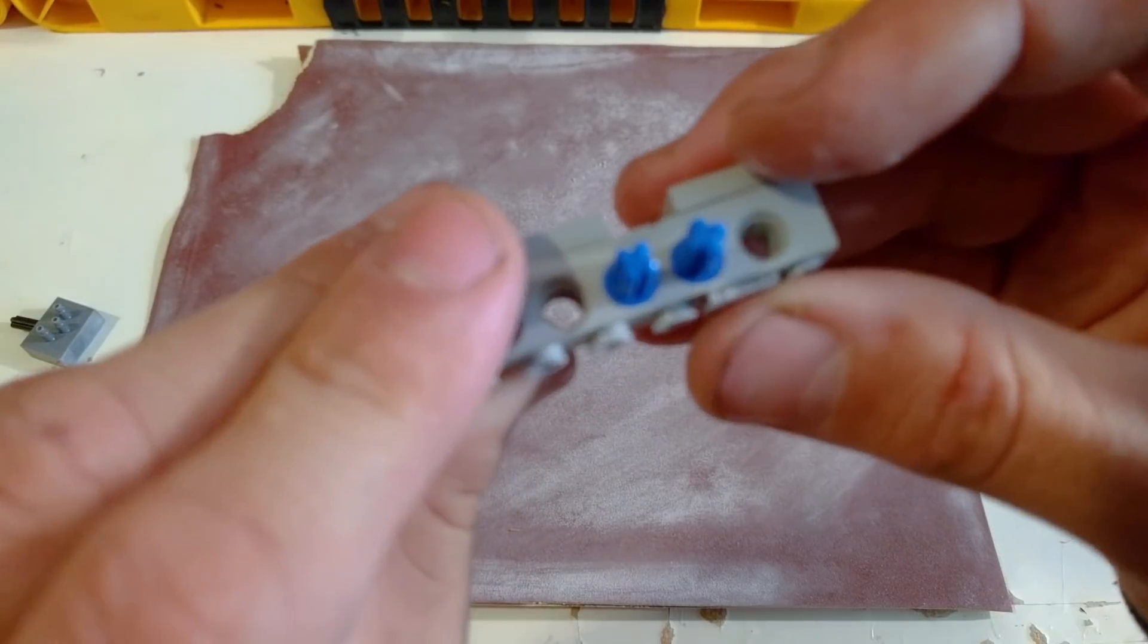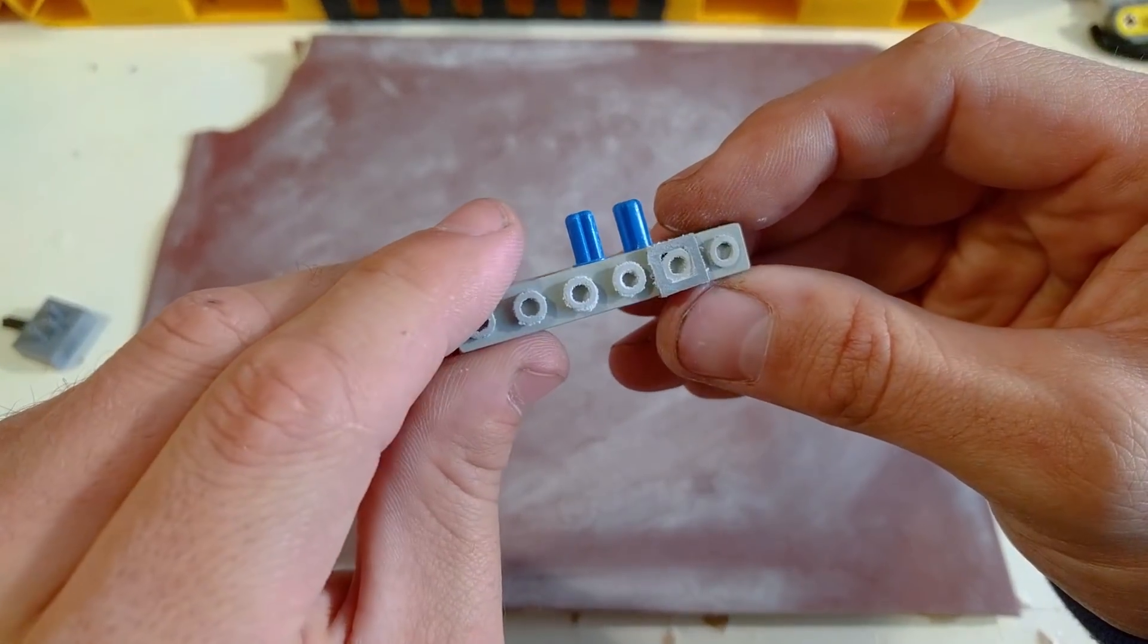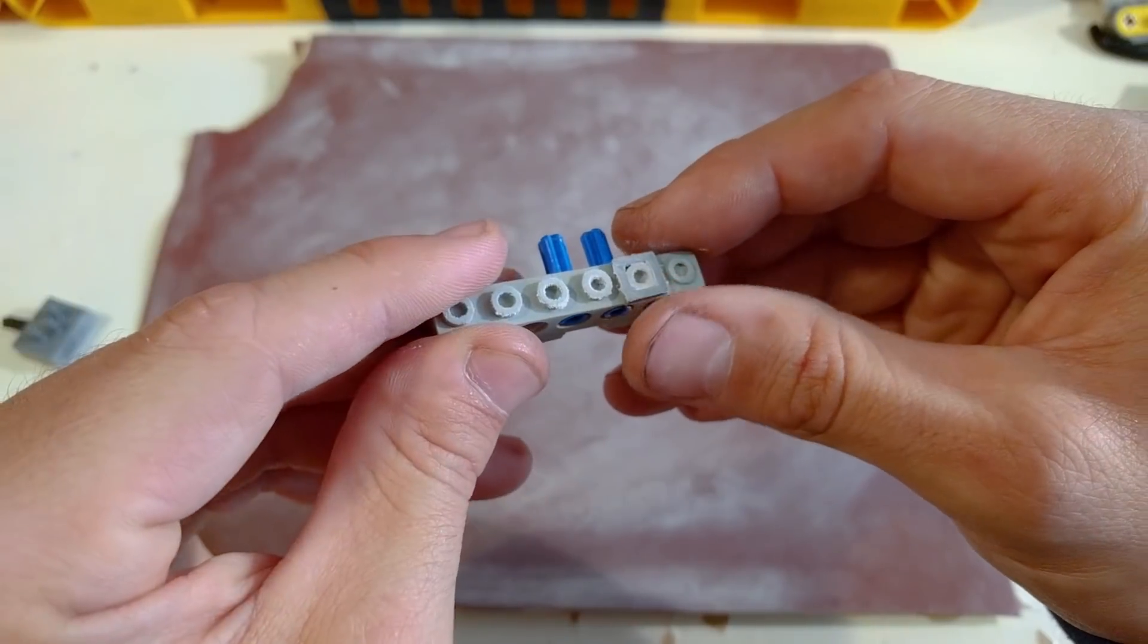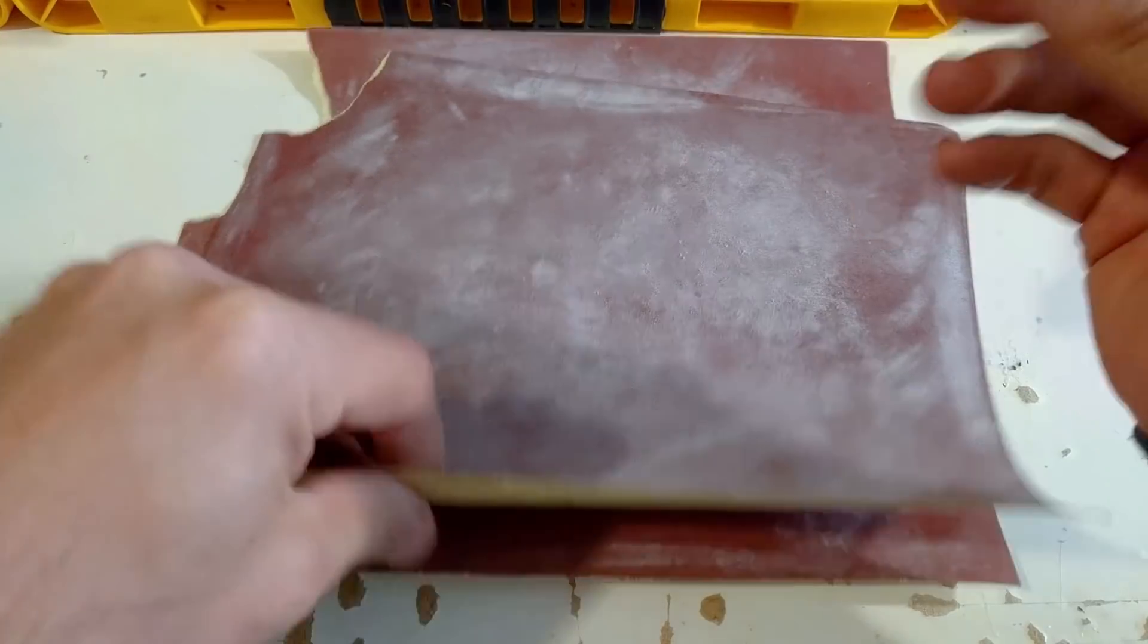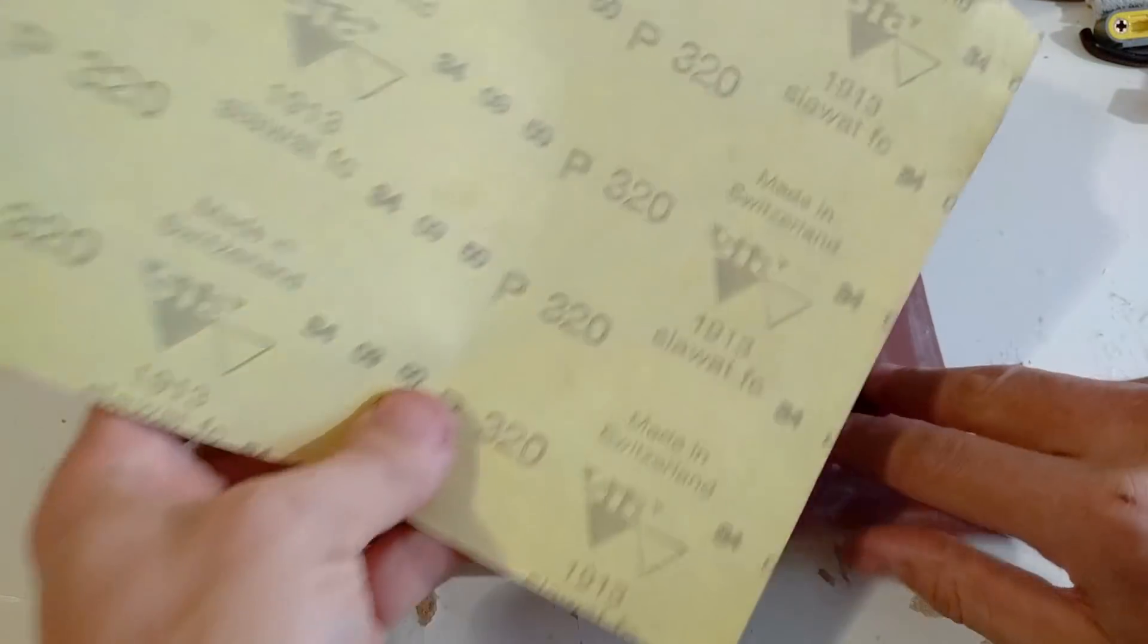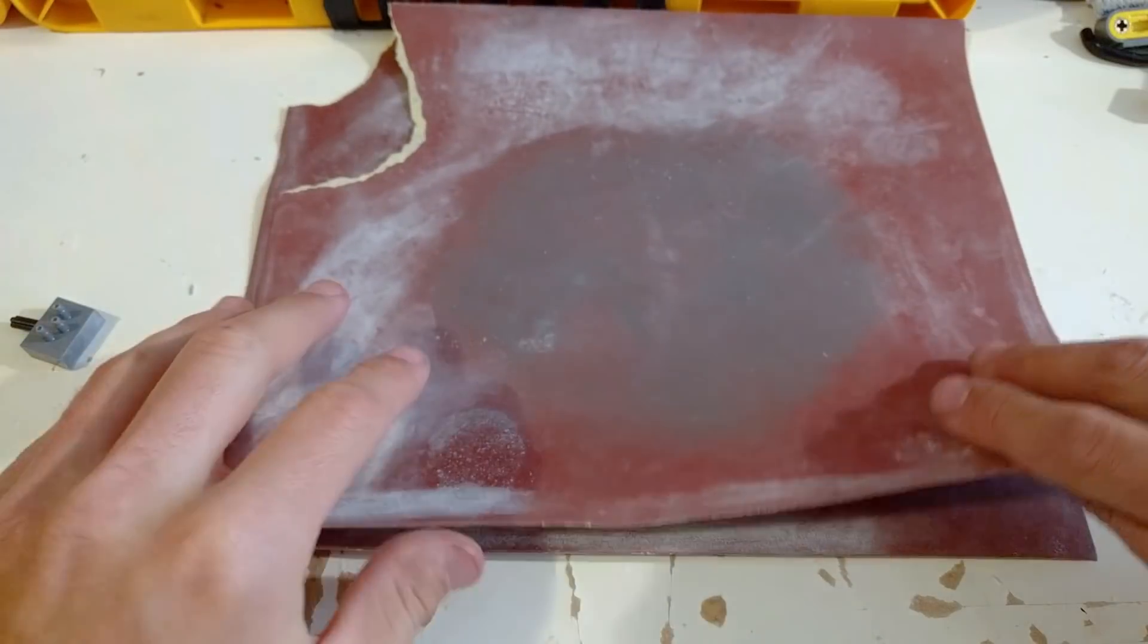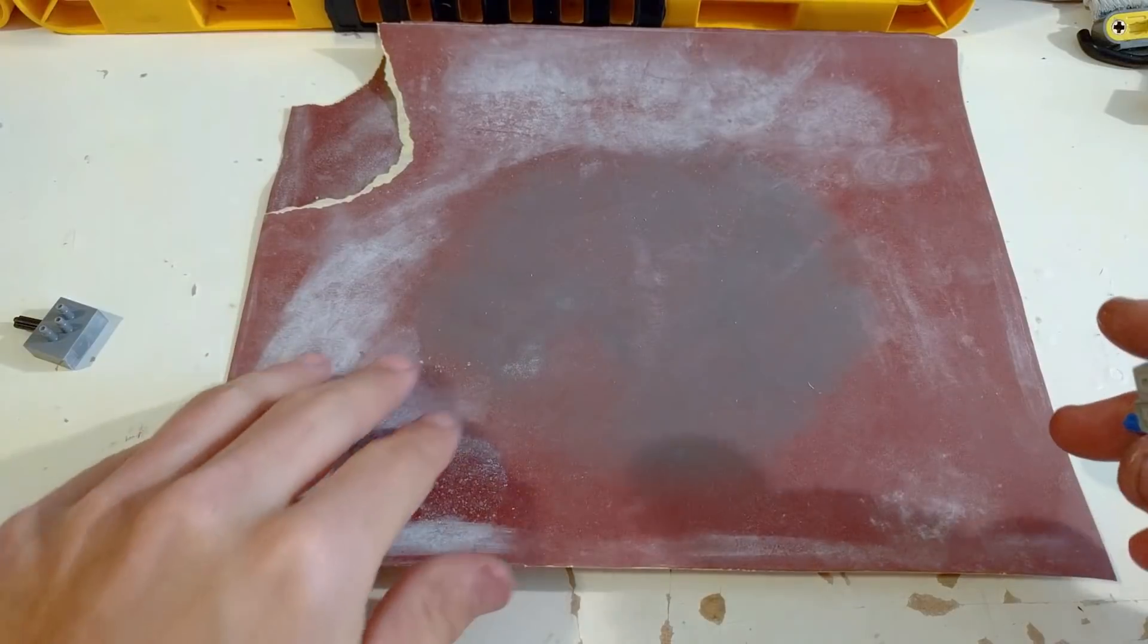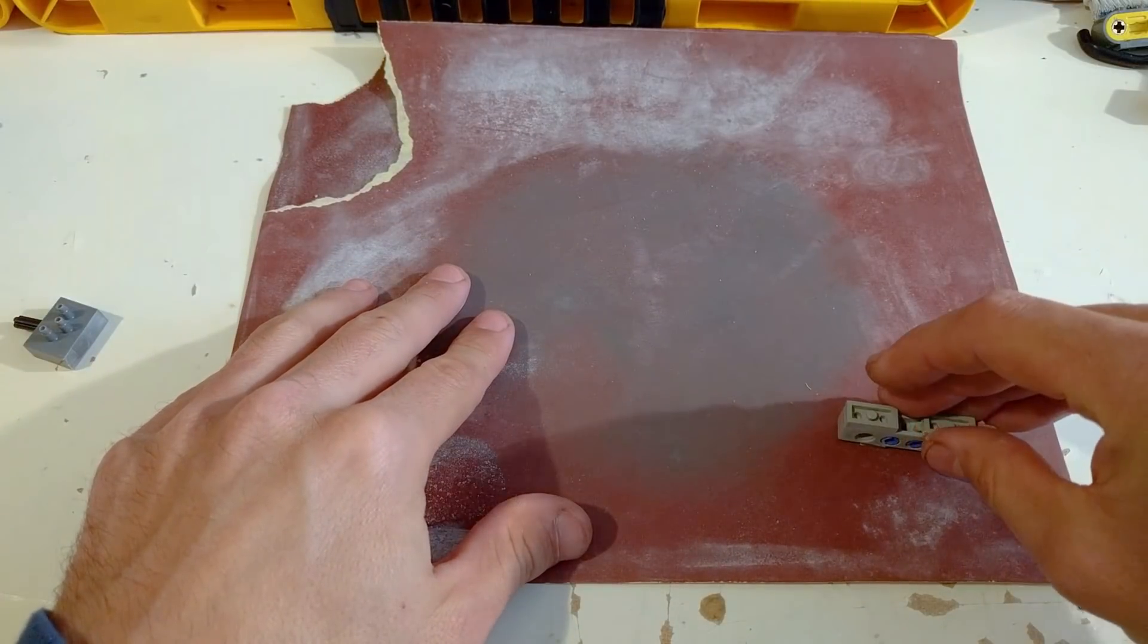Come on, focus. Okay, this looks about right. I'm using 320 grit sandpaper for the coarse process. Now we use a 1200 grit sandpaper for the fine process.